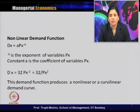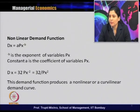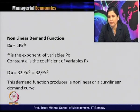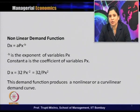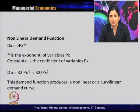Taking a non-linear demand function: dx = a · Px^(−b), where a and b are constants, minus b is the exponent and a is the coefficient of variable Px. Simplifying, suppose dx = 32 Px^(−2), or equivalently 32 divided by Px squared. In this case the demand function produces a non-linear or curvilinear demand curve — not a straight line — and the change in quantity demanded is not constant with each change in price.